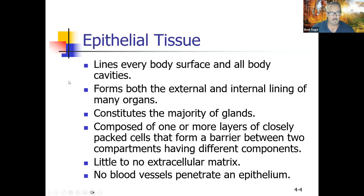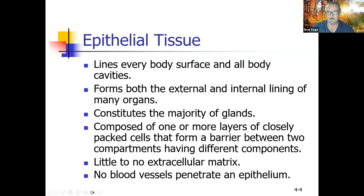Epithelial tissue lines every body surface and all body cavities — any place where there's a surface, including the inside of your stomach. It forms both the external and internal lining of many organs and constitutes the majority of glands. It's composed of one or more layers of closely packed cells forming a barrier between two compartments. One key feature is there's little or no extracellular matrix — it's almost all cells.